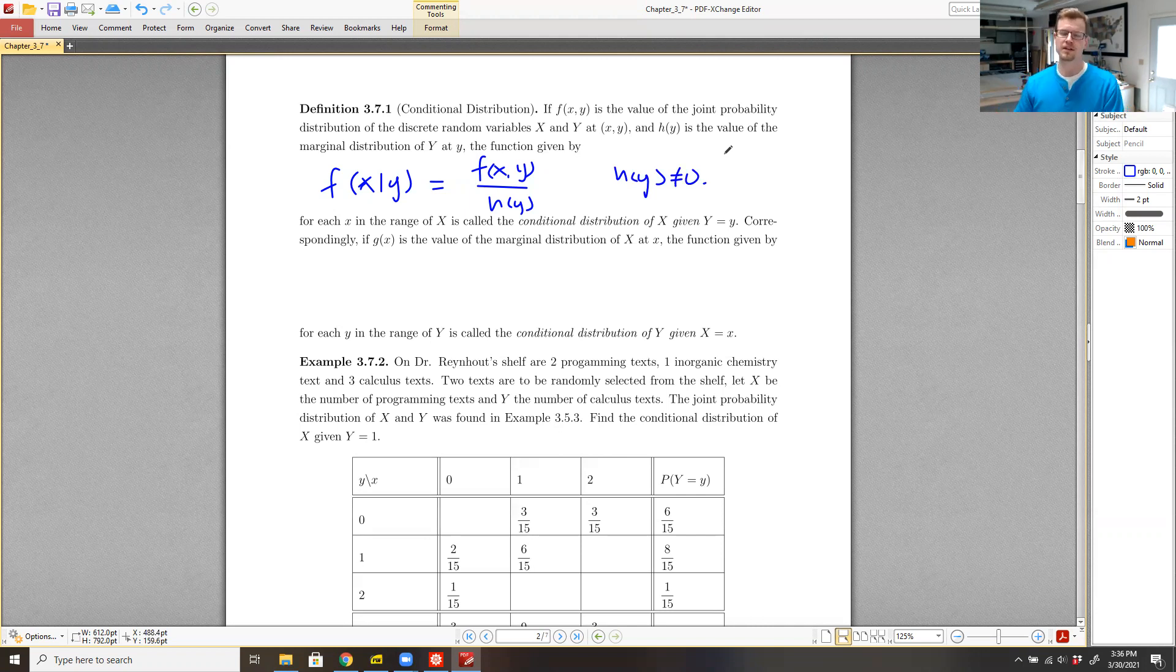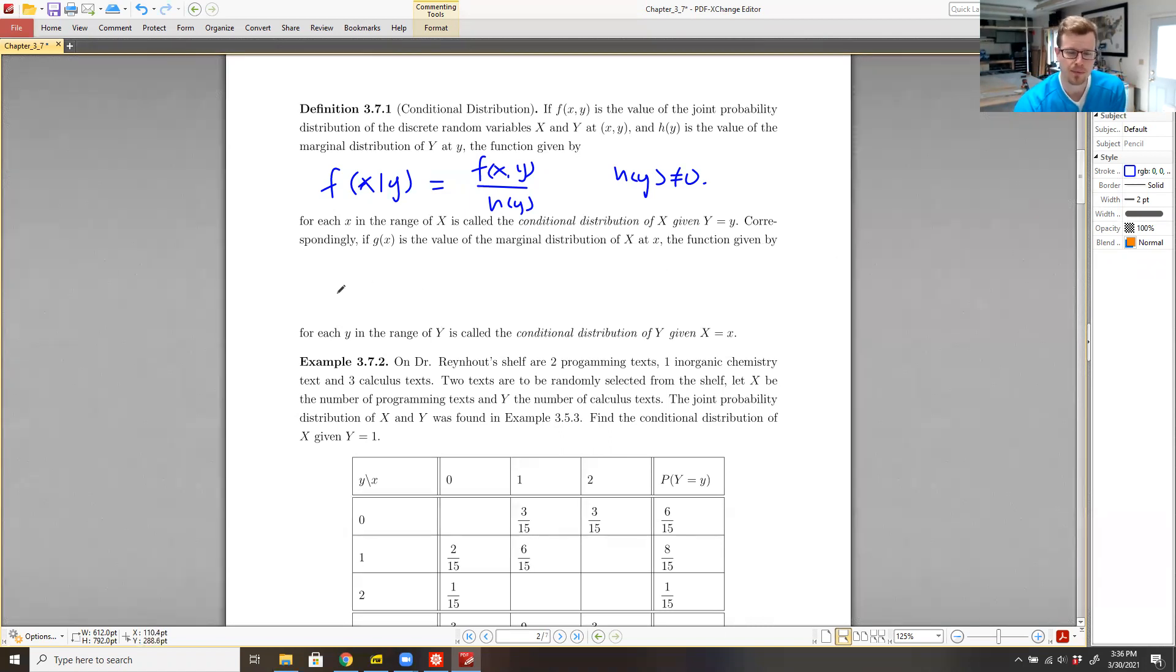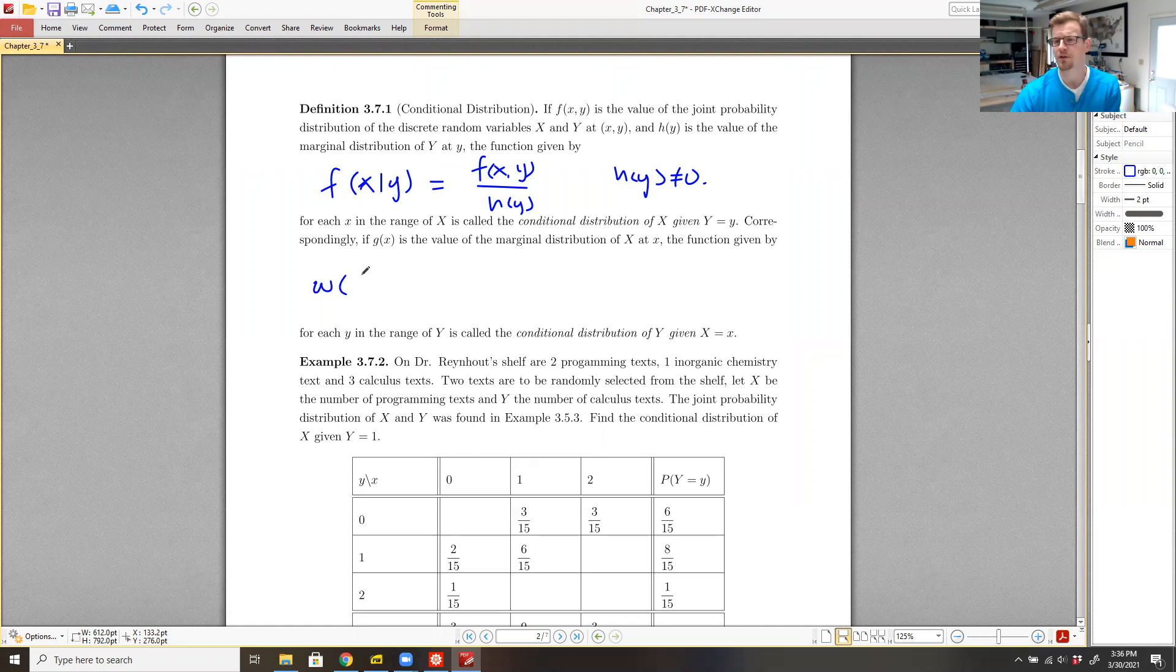where h of y is not equal to zero. So we're not defining the conditional distribution on quite as many values as the marginal distributions or the joint probability distributions are defined because we don't want to have division by zero. Similarly, the conditional distribution of y given a value of x would be f of x comma y divided by g of x, where g of x is the marginal distribution of x.